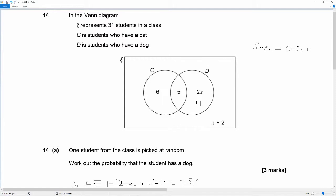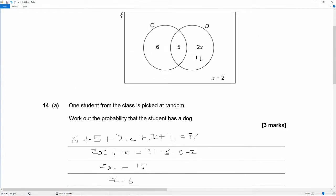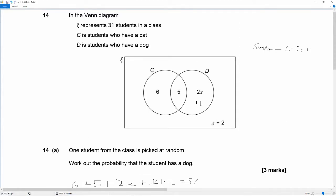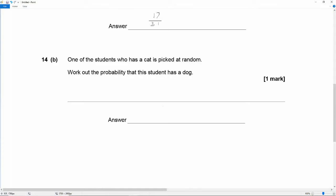And our event, what's our event again? Work out the probability that this student has a dog. So we're looking for cat owners that have a dog. Well, there are 5 people that have both a cat and a dog. So the answer is 5 over 11.